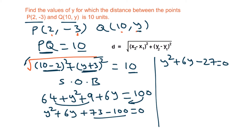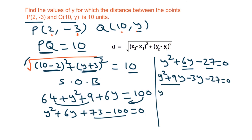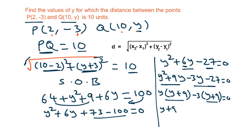We solve using the factorization method. We need factors of 27 with a difference of 6: 9 and 3, since 9 times 3 is 27 and 9 minus 3 is 6. We write y squared plus 9y minus 3y minus 27 = 0. Taking y common from the first two terms gives y(y plus 9), and taking minus 3 common from the last two gives minus 3(y plus 9). So (y plus 9)(y minus 3) = 0.